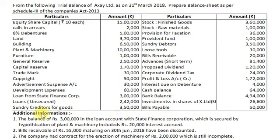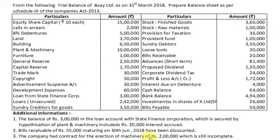Here are some additional pieces of information. First, the balance of Rs.3,00,000 in the Loan Account with State Finance Corporation, which is secured by hypothecation of plant and machinery, includes Rs.20,000 interest accrued. Second, Bills Receivable of Rs.55,000 maturing on 30th June 2018 have been discounted. Third, the company had a contract for the erection of machinery of Rs.2,00,000 which is still incomplete. From these financial data, we are to prepare a vertical balance sheet as per Companies Act 2013, Section 129, Schedule III, Part 1.